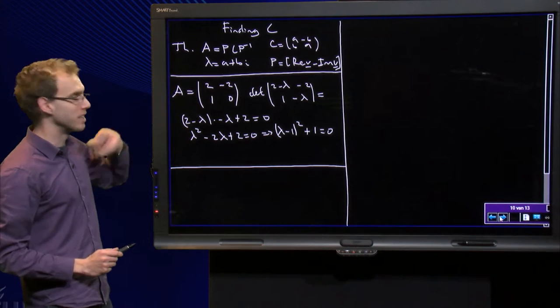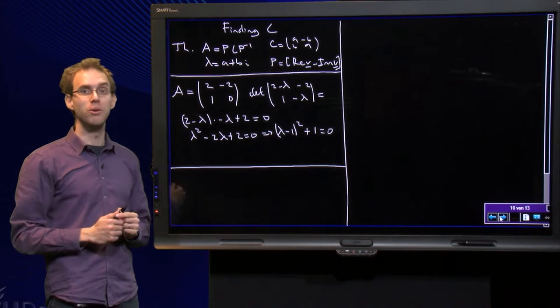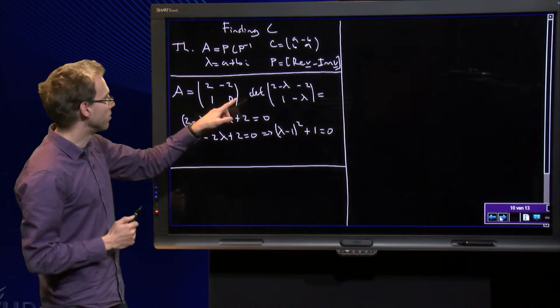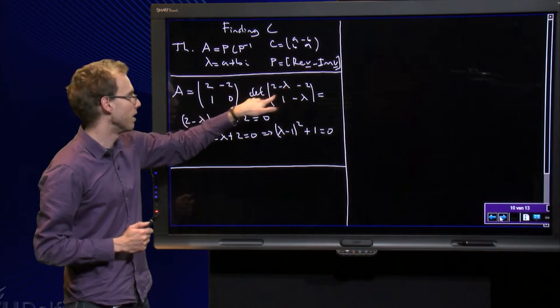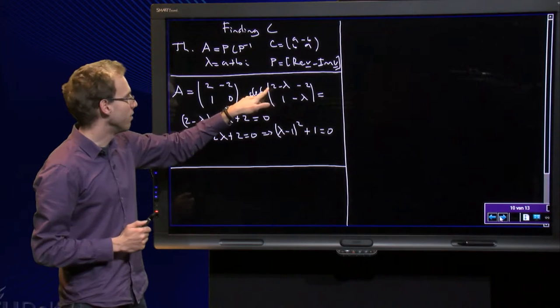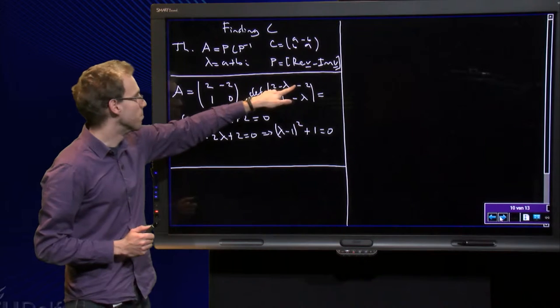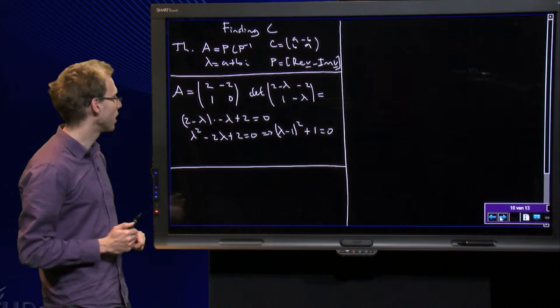Suppose we have a matrix A here, and I want to find a matrix C. The first thing I need to do is compute the eigenvalues of A. I compute the determinant of (2-λ, -2; 1, -λ), which equals (2-λ)(-λ) minus (-2)(1), so plus 2, which has to equal zero.